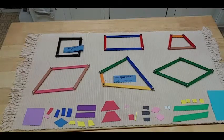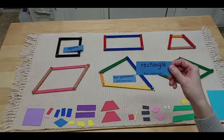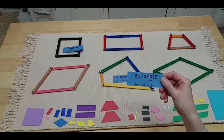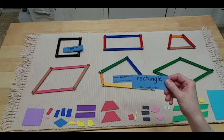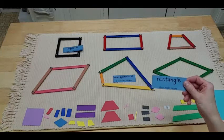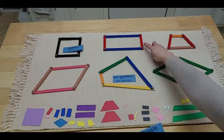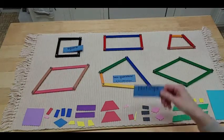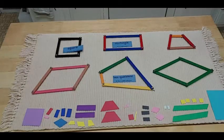My next shape is a rectangle. And just like the square, it has four sides and four right angles. However, two sides are short and two sides are long. And that's what makes a rectangle.